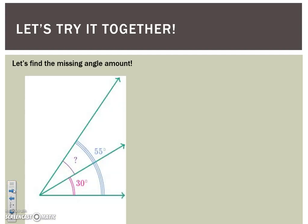All right, let's take a look at our first one. We know that this whole angle is 55 degrees. We know that this angle right here is 30, so we're trying to find this missing piece.